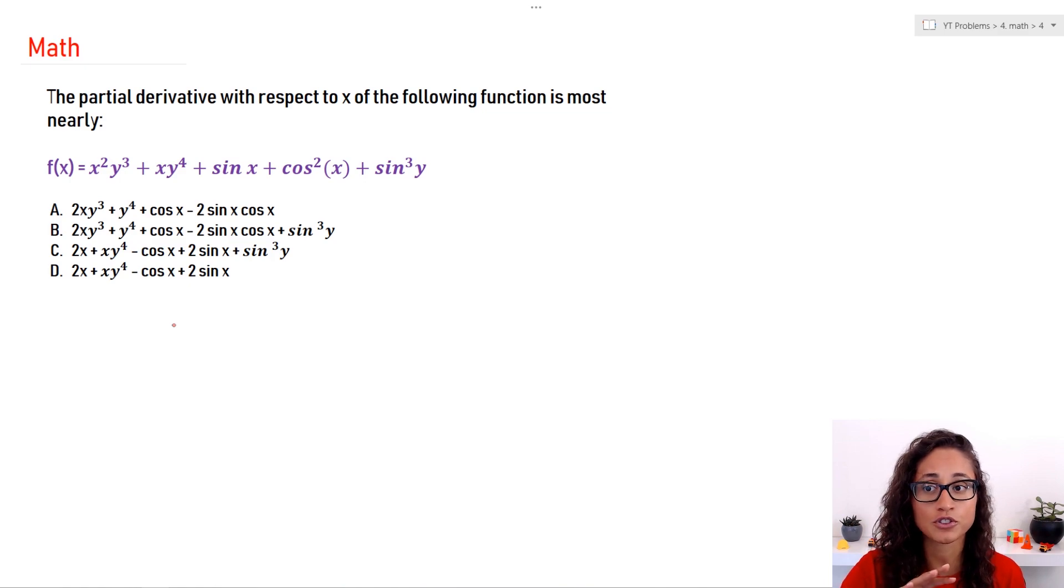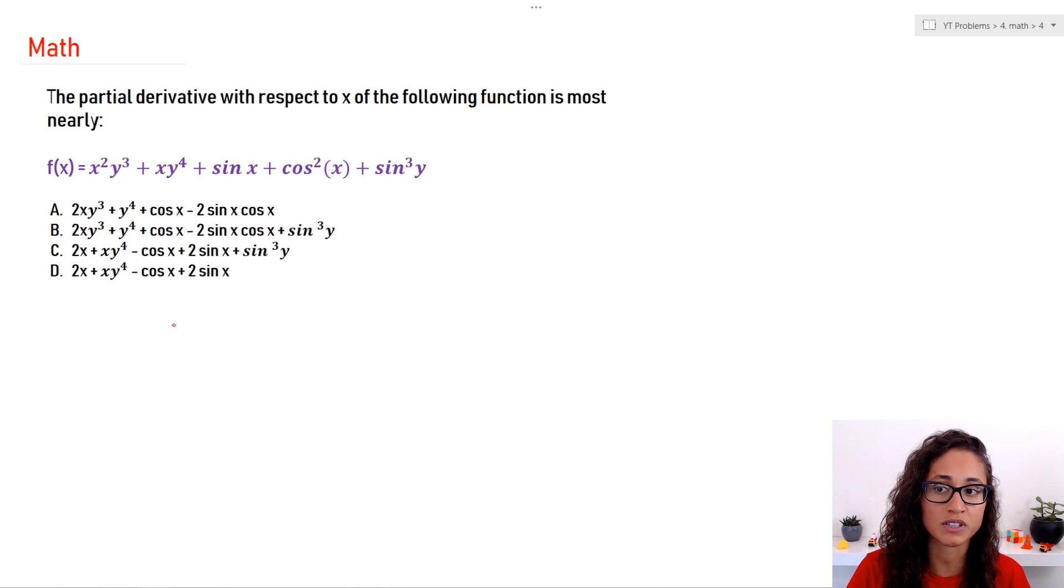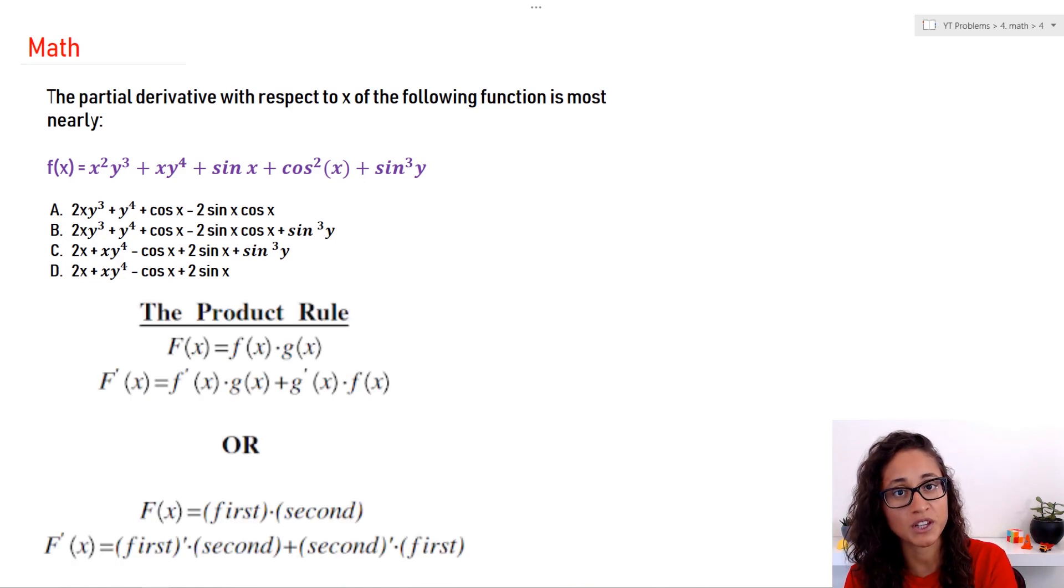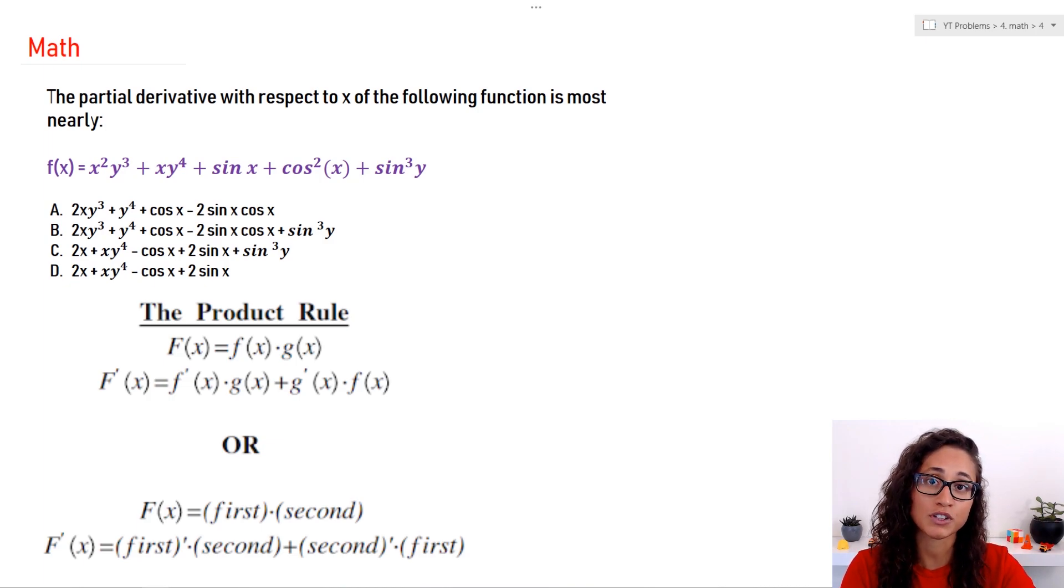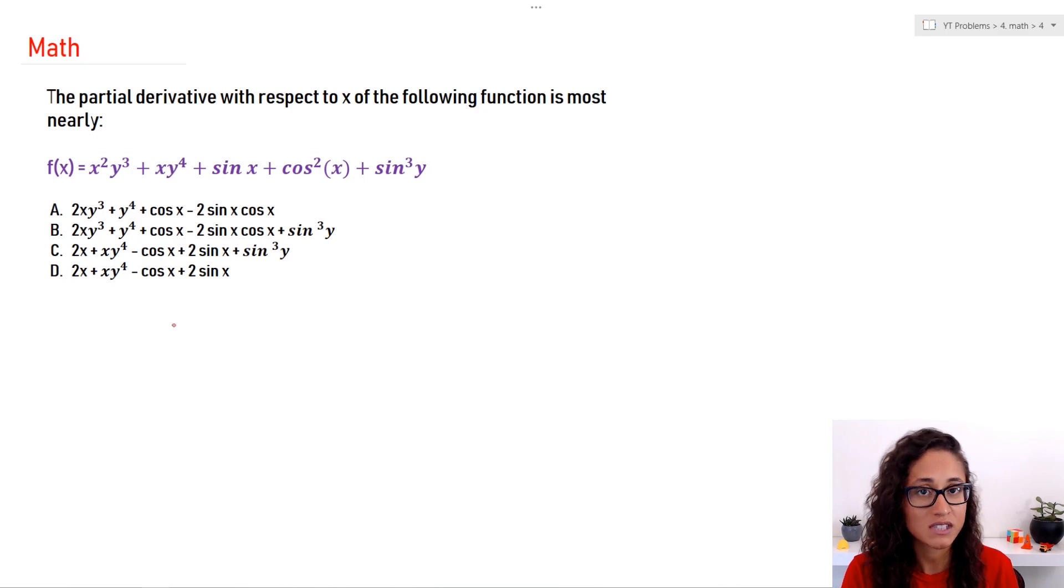Okay, so let's take the first term. We have x squared times y cubed. Usually when you have two terms multiplied, we do the product rule. If you have one function divided by another function, we do the quotient rule. The product rule tells us that you take the derivative of the first term, then multiply by the second term, then add the derivative of the second term and multiply it by the first term as it is.